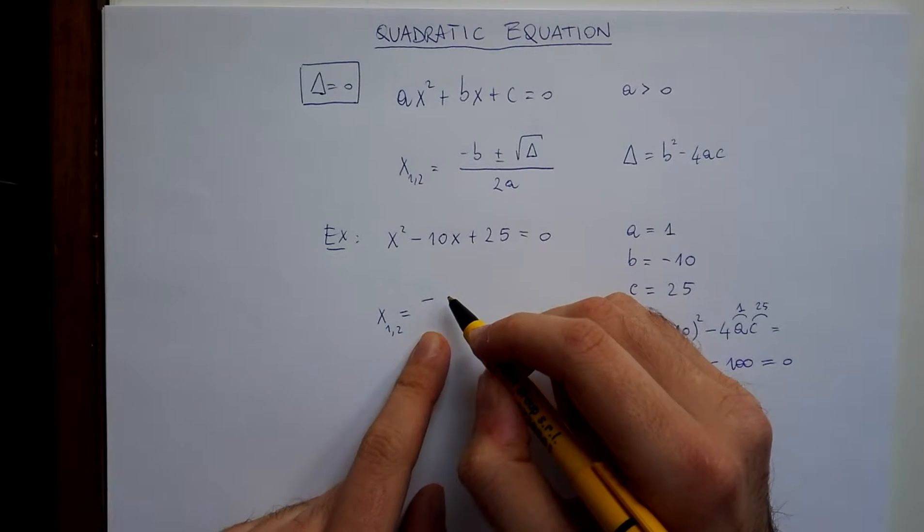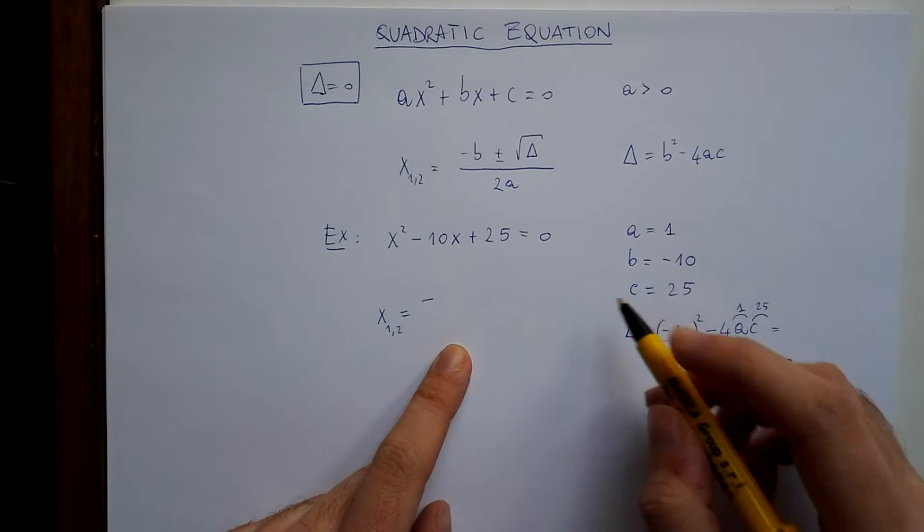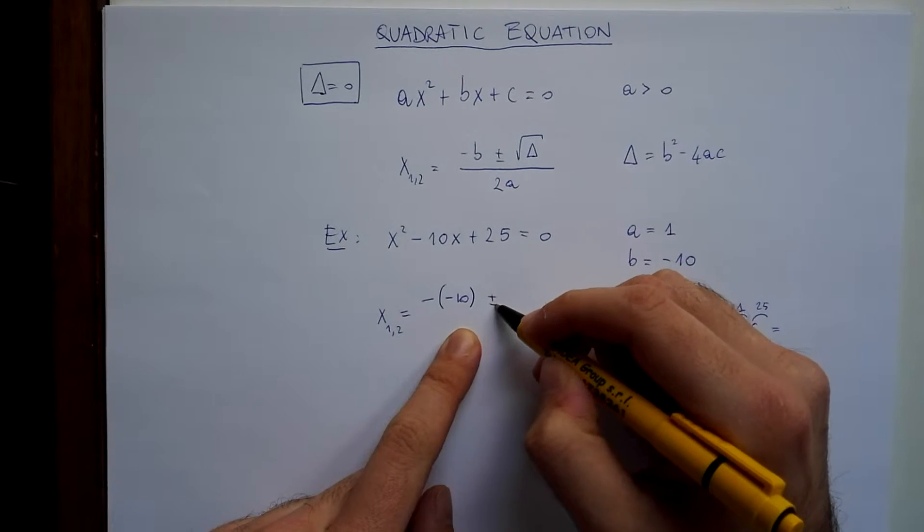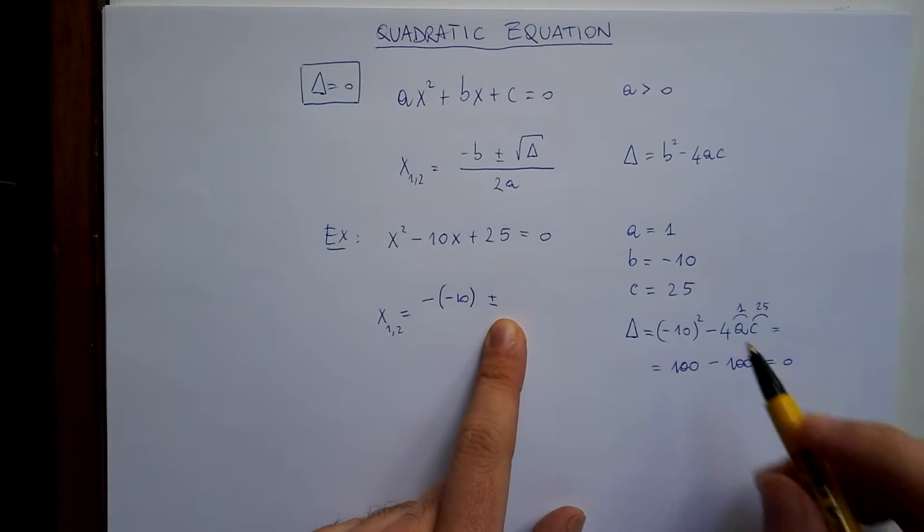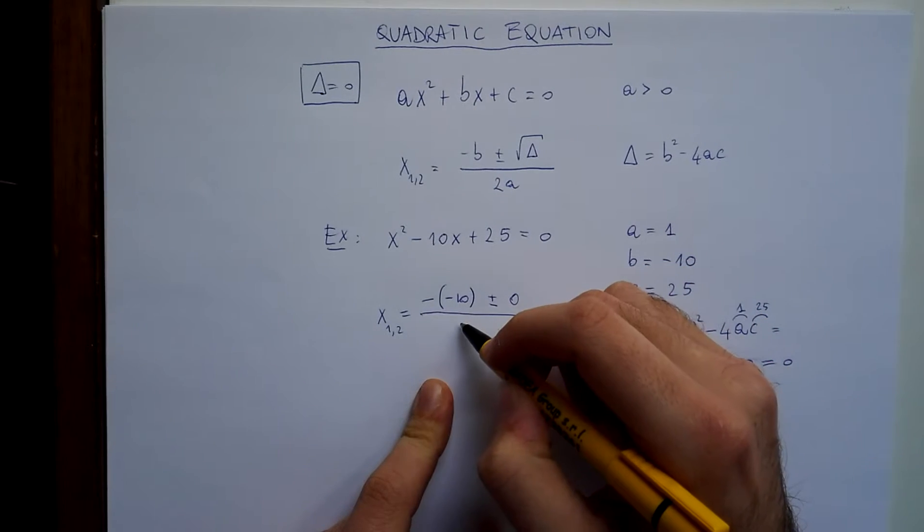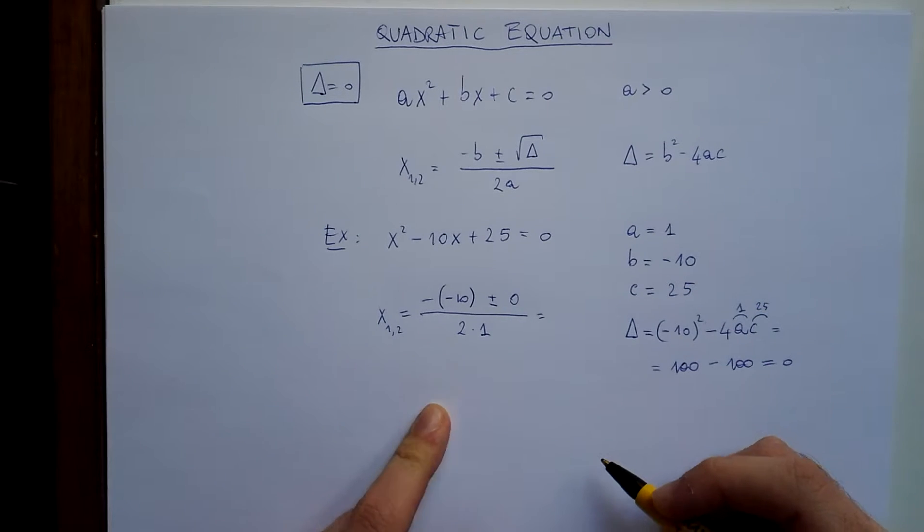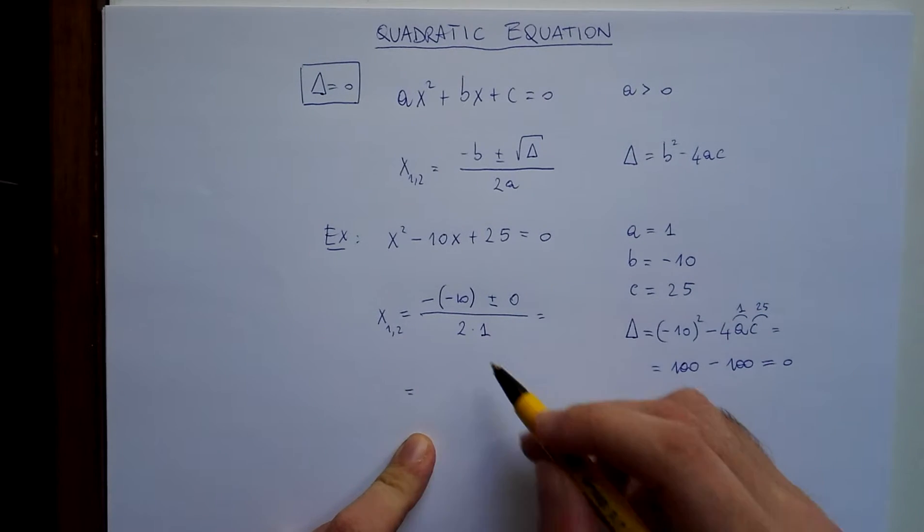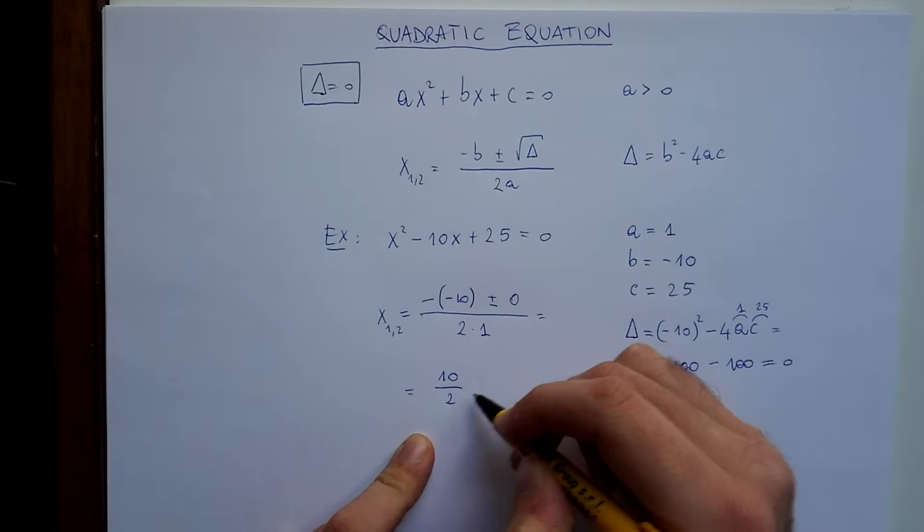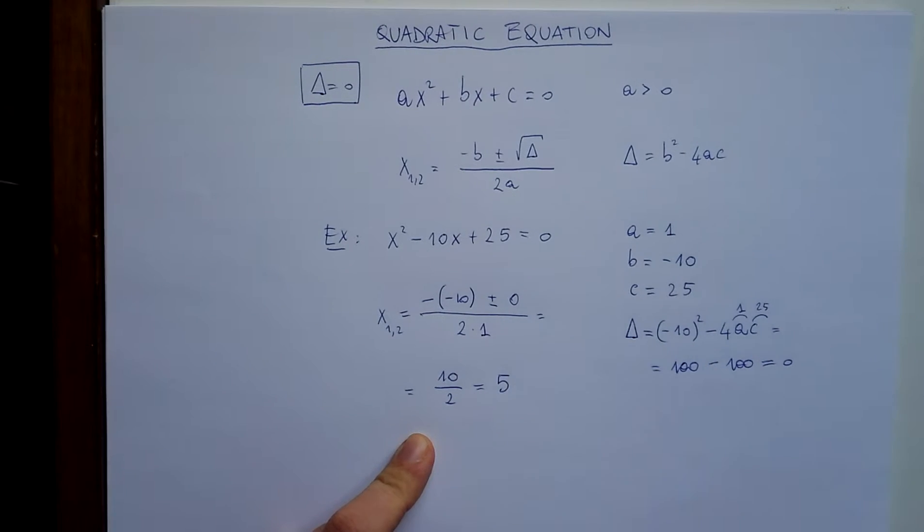Let's write the formula: minus b. b is minus 10, so minus minus 10 plus or minus square root of zero, which is zero. Let's write it for completeness. 2 times 1. So we have 10 over 2, which equals 5.